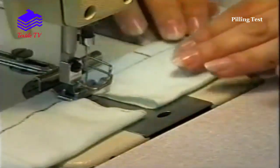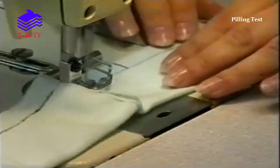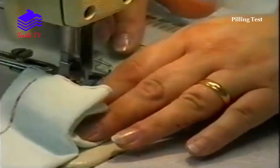The specimens are sewn up to form a tube using a balanced seam with the face of the fabric facing inwards.